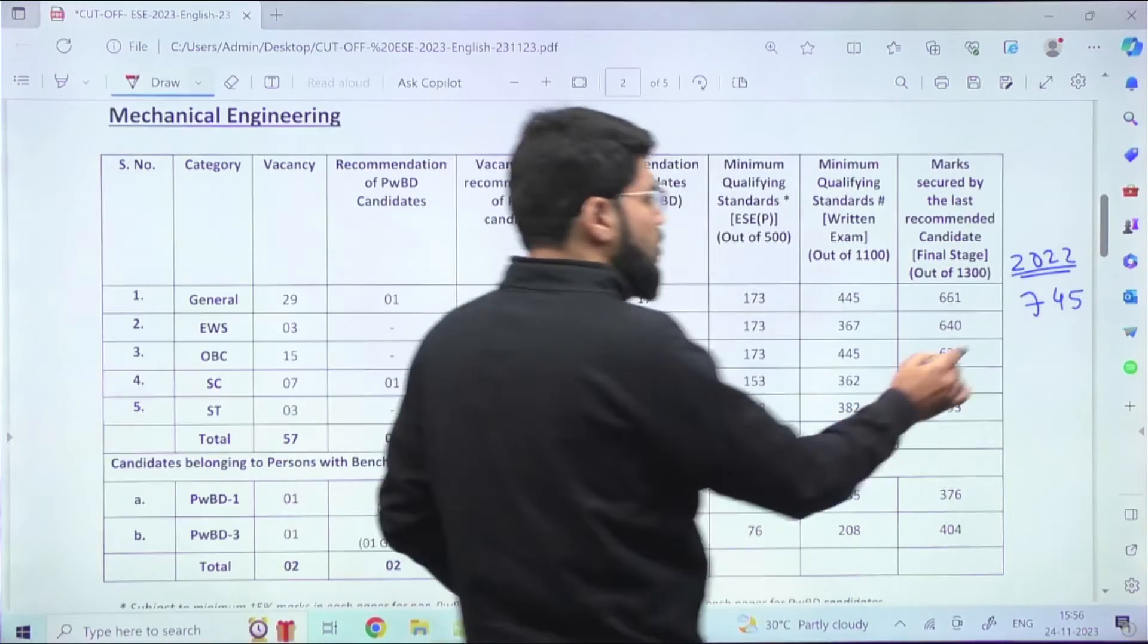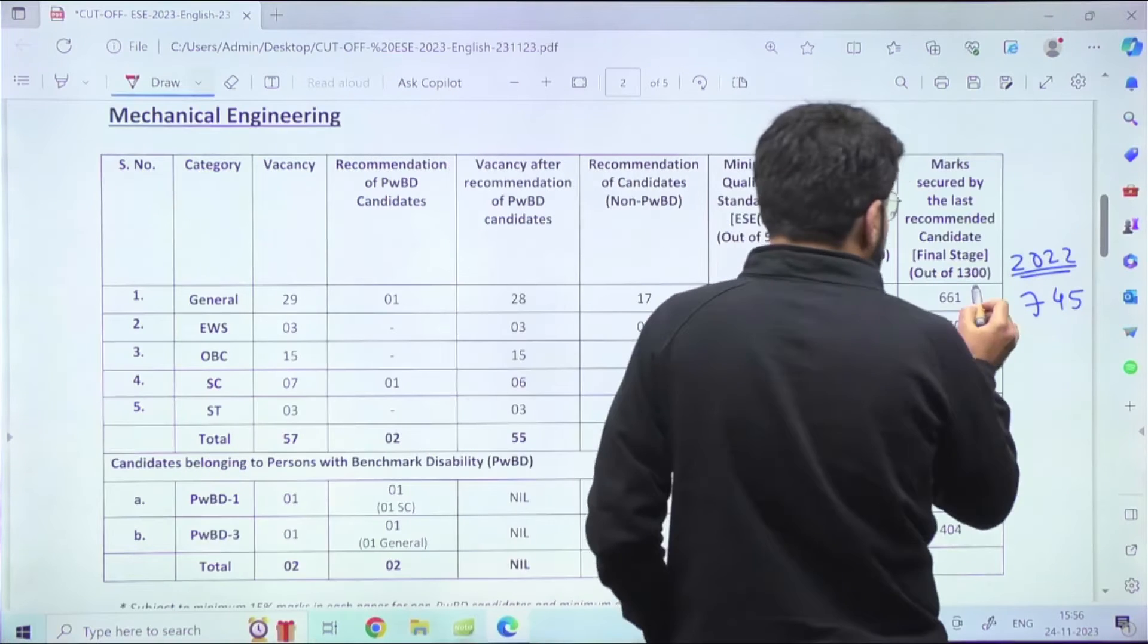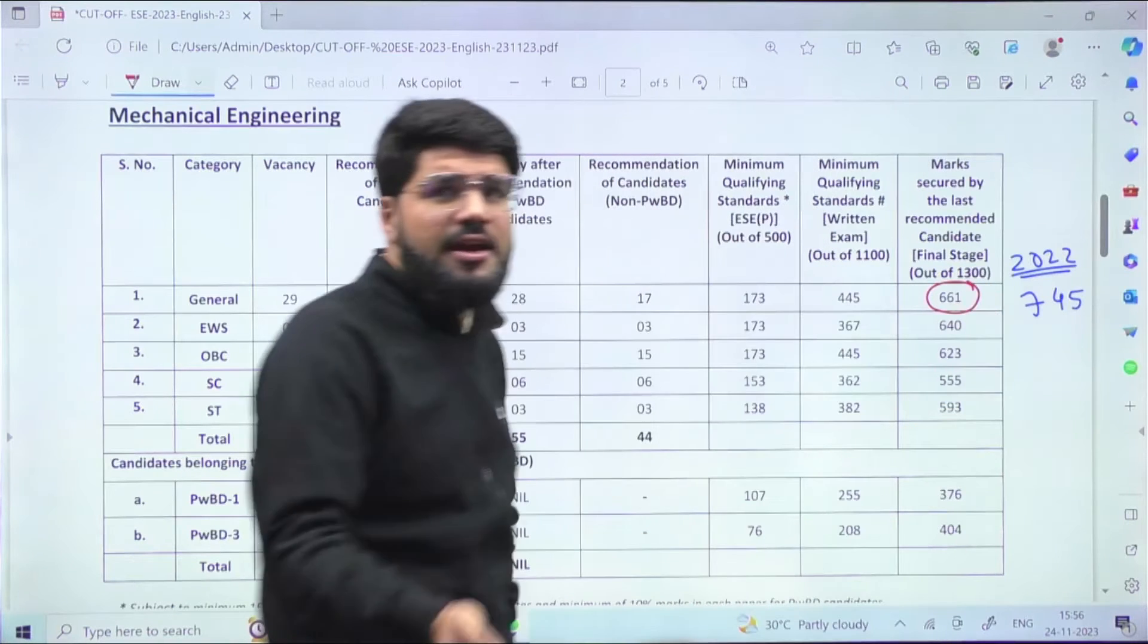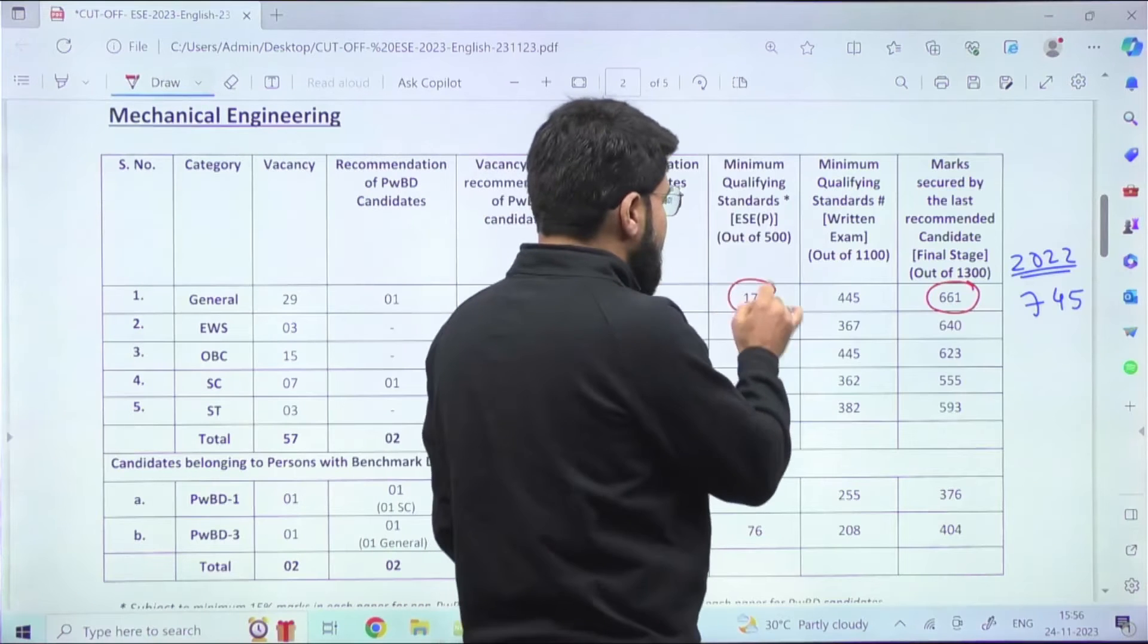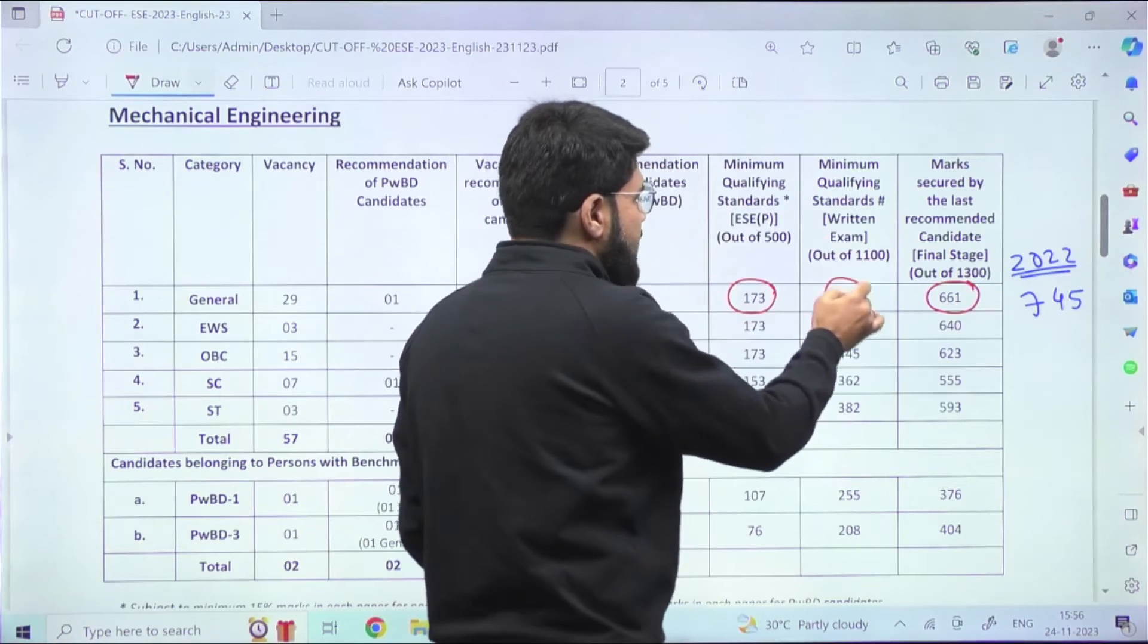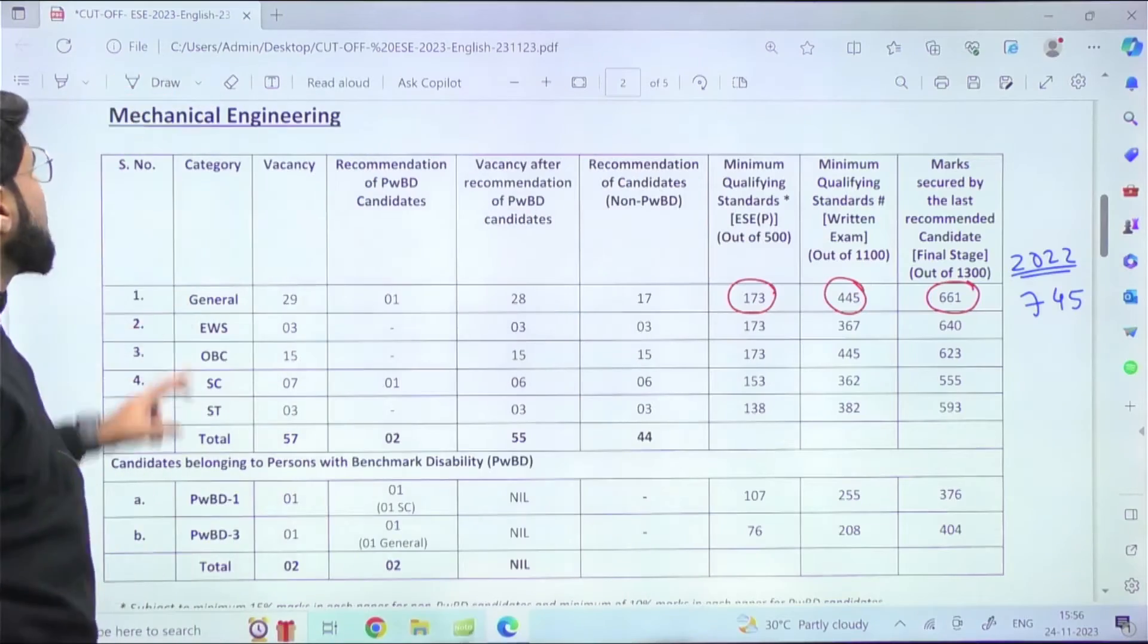Coming to Mechanical, the cutoffs are low here as well. Last year, in 2022, it was 745. This year it's 661, again almost 50 percent. The prelims is 173 cutoff, and out of 1100, the prelims plus mains written cutoff is 445 for Mechanical.